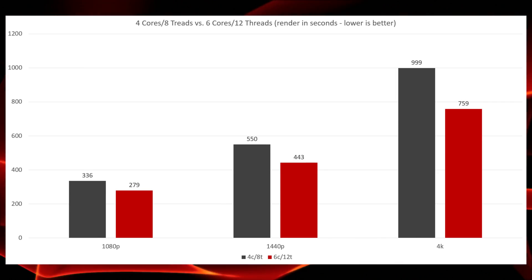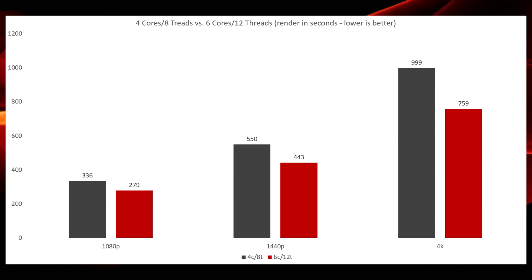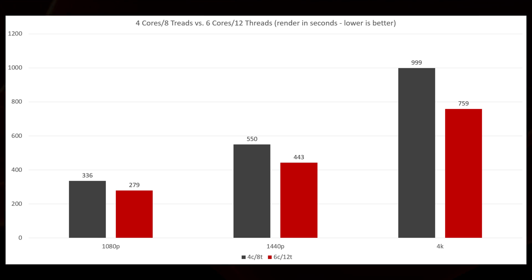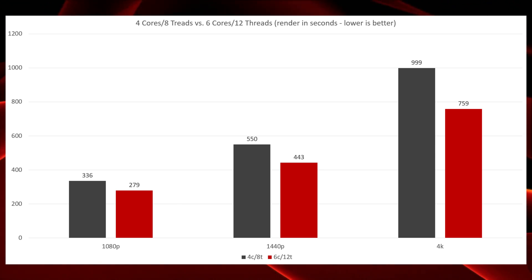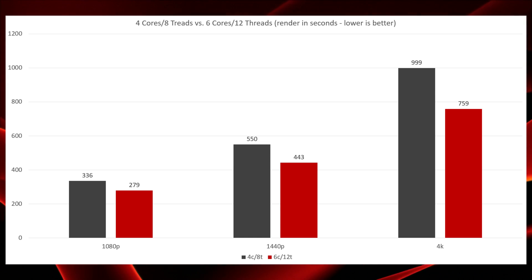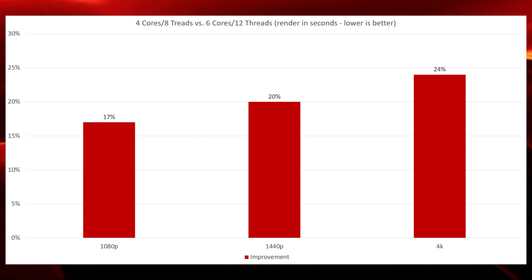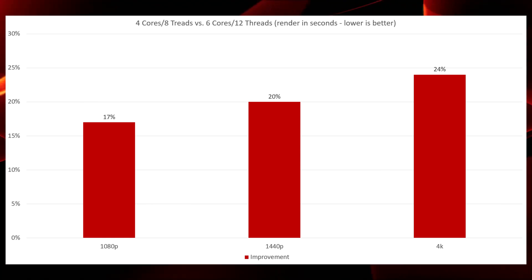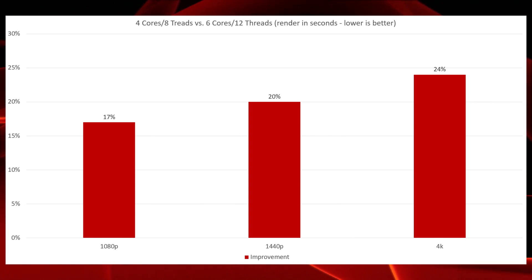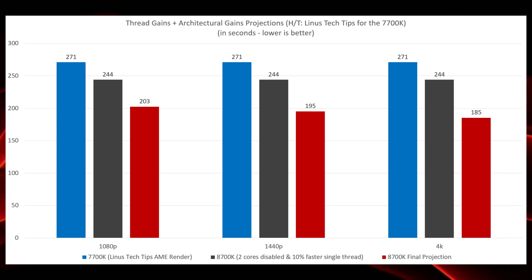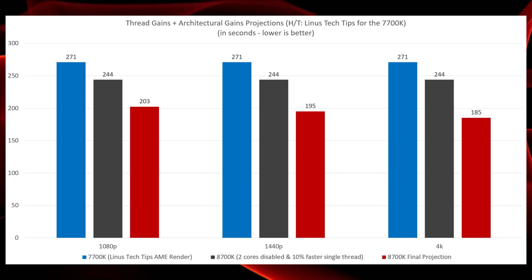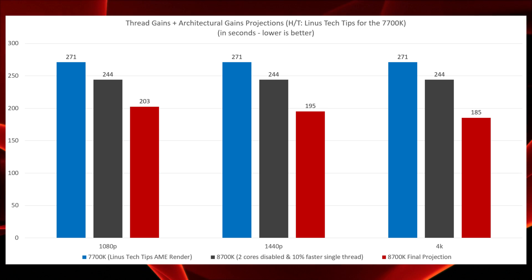My first task was to figure out what gains we'd normally see in Adobe Media Encoder going from four cores and eight threads to six cores and 12 threads. The raw data is on this chart for 1080p, 1440p, and 4K renders. Depending on your settings and use case these numbers will fluctuate, but a clear trend emerged: the higher the resolution, the bigger the gain from adding cores. We saw 17% gains at 1080p, 20% at 1440p, and 24% at 4K. The blue bar represents the 7700K using the 271-second render time provided by Linus Tech Tips.